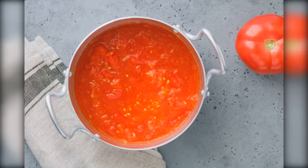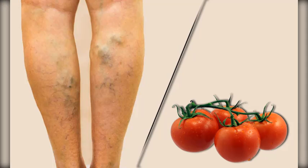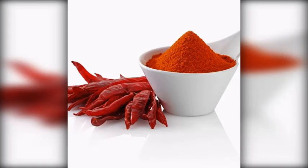Tomato seeds: slice two tomatoes without losing any seeds and blend into a smooth puree mixture. Apply this mixture topically on the affected area four times a day for at least two months. Tomato seeds contain salicylic acid, which prevents blood clots and improves blood flow.